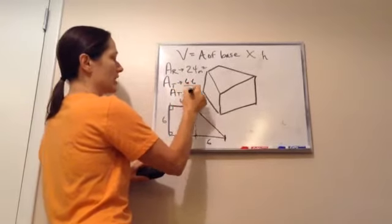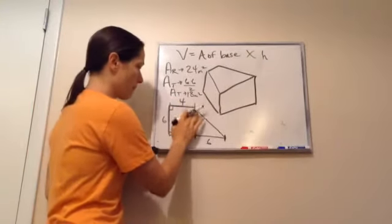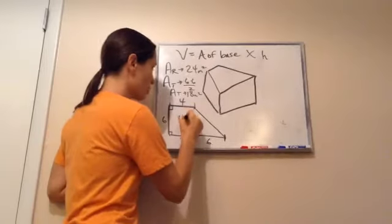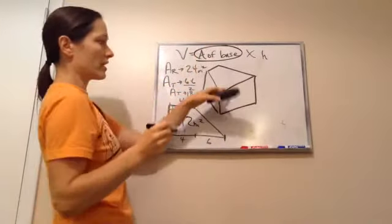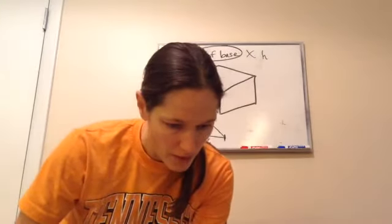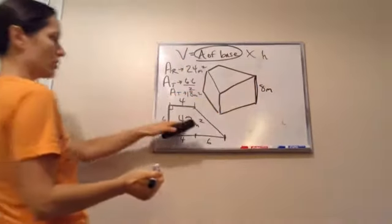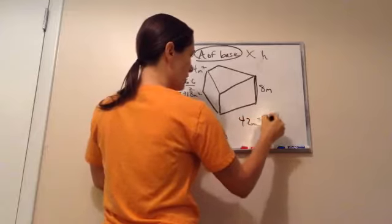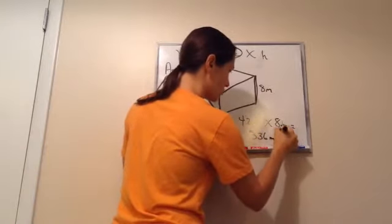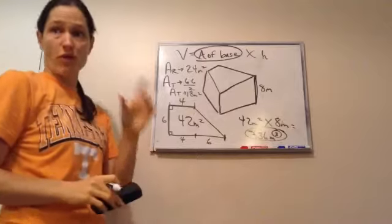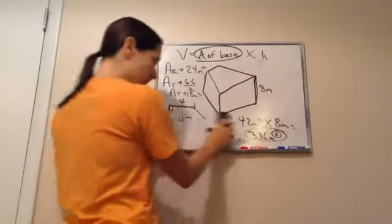The area of the triangle is 18 meters squared and the area of the rectangle is 24 meters squared. Adding them together gives 42 meters squared — that's the total area of the base. Now the right prism is eight meters high, so we do 42 meters squared times eight meters, which equals 336 meters cubed. Always make sure you're cubing because volume multiplies meters × meters × meters.